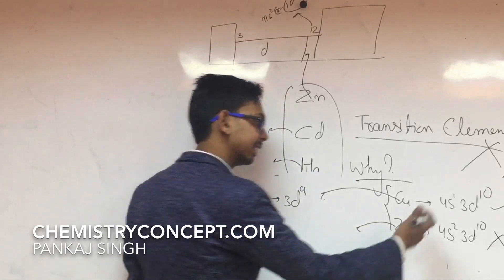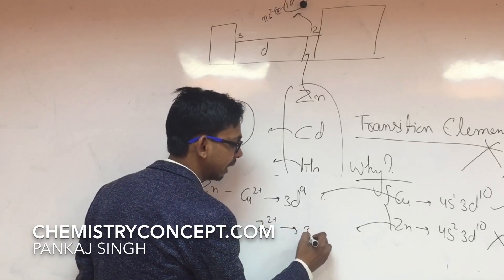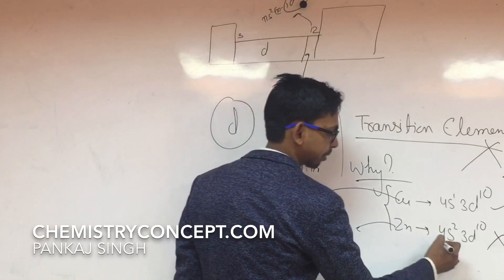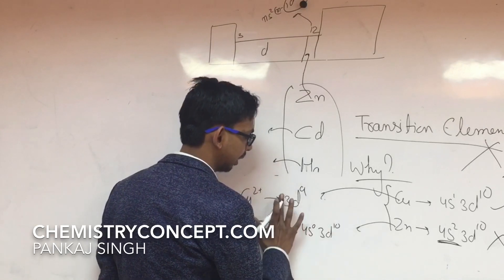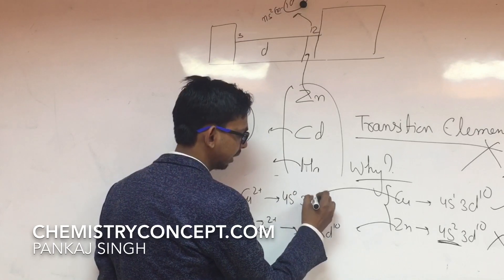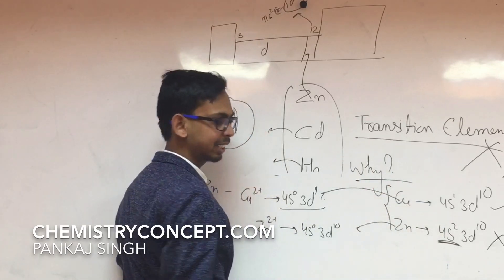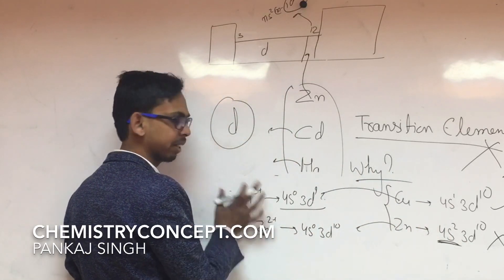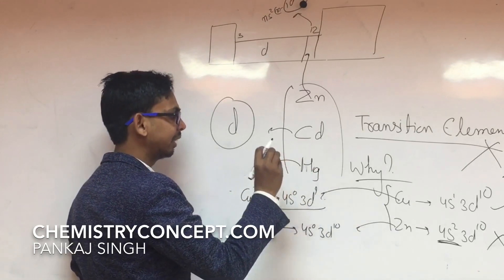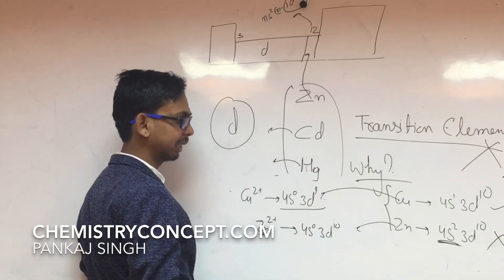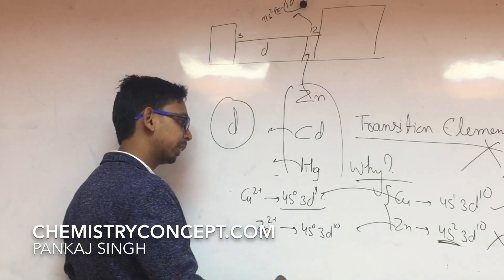If we talk about zinc, zinc is 3d10 in ground state, and Zn²⁺ is also 3d10, because the two electrons are removed from 4s — so it becomes 4s0 3d10. Copper²⁺ on the other hand is 4s0 3d9. So if a metal has an incompletely filled D sub-shell either in its ground state or in its ionic form, it is called a transition element. But zinc, cadmium, and mercury do not have an incompletely filled D sub-shell either in their ground state or in their ionic form, so they are not considered transition elements.